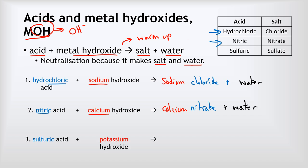Last example: sulfuric acid reacting with potassium hydroxide. The cation is potassium from the potassium hydroxide, so this is going to produce a potassium salt. Sulfuric acid makes sulfate salts, so this will be potassium sulfate. And because it's a neutralization reaction, we also make water.